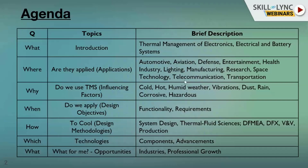Why do we use the thermal management system? The influencing factors matter a lot. Electronic and electrical systems contain integrated circuits, inductors, IGBTs, silicon-controlled rectifiers, and many other packages. These components are not as robust as even a human — they are very sensitive — and their functionality depends on adaptability to the environment.